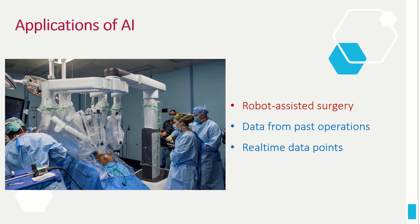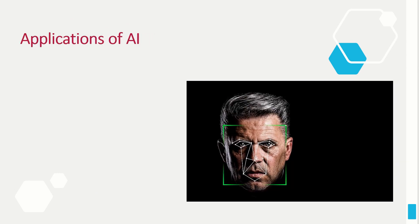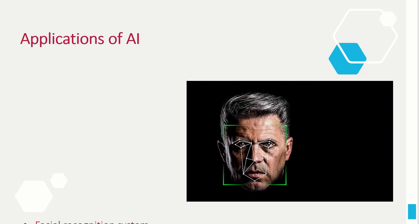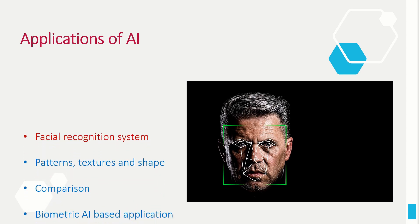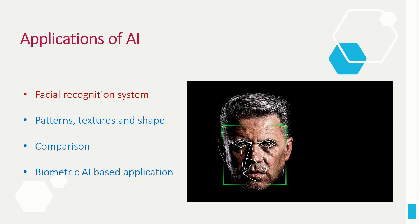Now let's learn a few applications of AI. In healthcare, robots can use data from past operations to inform new surgical techniques. It helps surgeons determine what is happening during a complex surgery by providing real-time information about the movements the surgeon makes during the procedure. A facial recognition system is a technology capable of identifying a person by comparing selected facial features from a given image with faces in a database, by comparing patterns, textures, and shape. It is also described as a biometric artificial intelligence-based application.